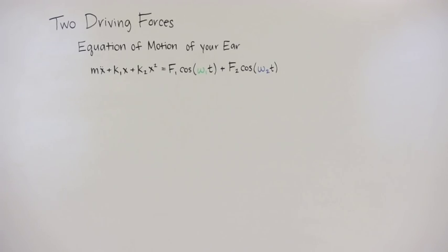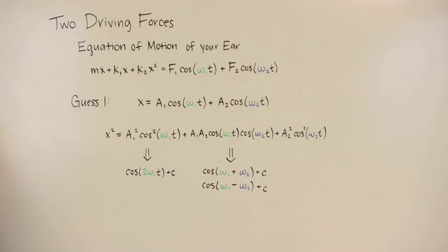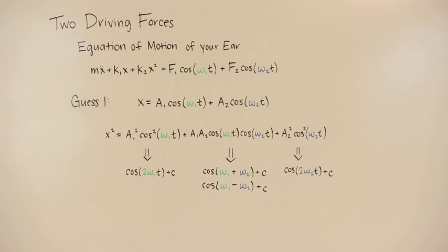Now let's look at the case with two driving frequencies, omega 1 and omega 2. We will make our guess to include a cosine term for each frequency. Now if we analyze the non-linear term, things get interesting. This is where Tartini tones appear. As you can see from the middle term, we get a frequency that looks like omega 1 minus omega 2, hence a Tartini tone appears.